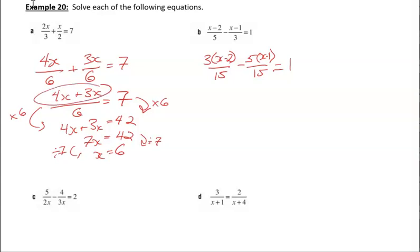So if I multiply everything on this side by 15, I multiply everything on that side by 15, look what happened. I've got 3x minus 2 minus 5x minus 1 equals 15. Just the same as I had a minute ago.